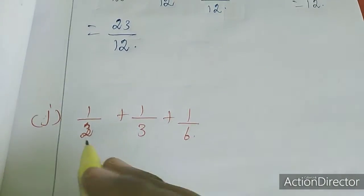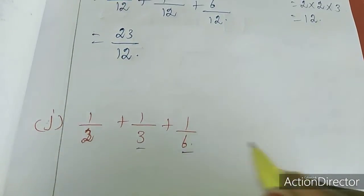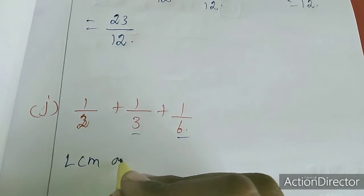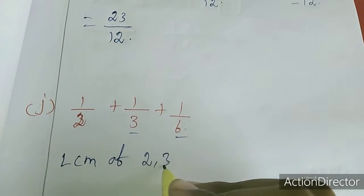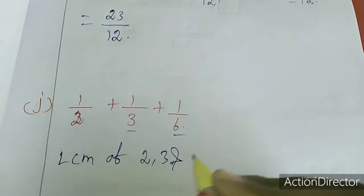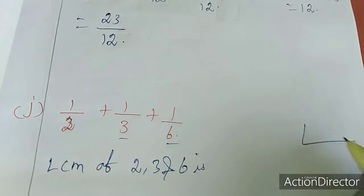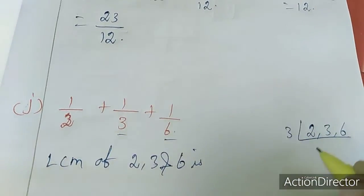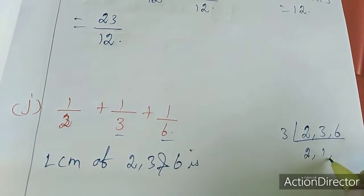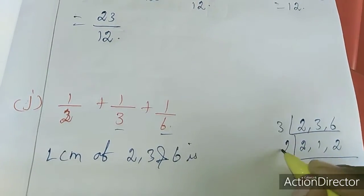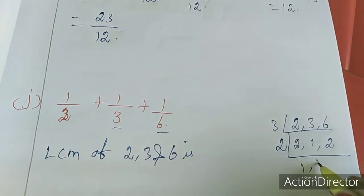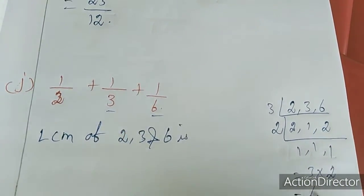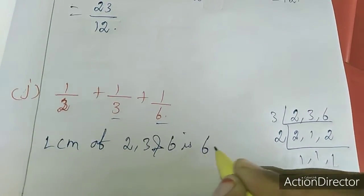Next sum. This 2 will come in one table, so LCM of 2, 3 and 6 is — I am going to find out. 6: first 3 table: 2, 1, 2. Again 2 table: 1, 1, 1. So LCM is 3 into 2 = 6. LCM is 6.